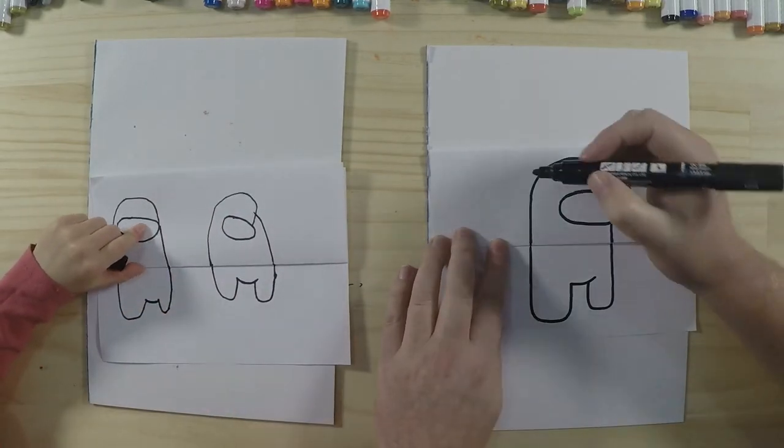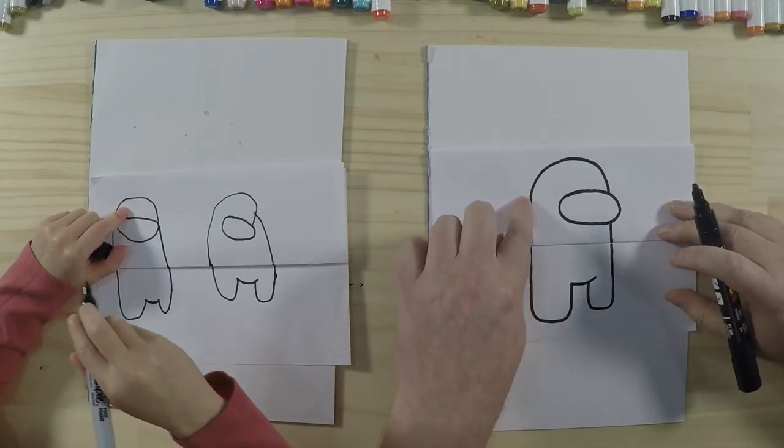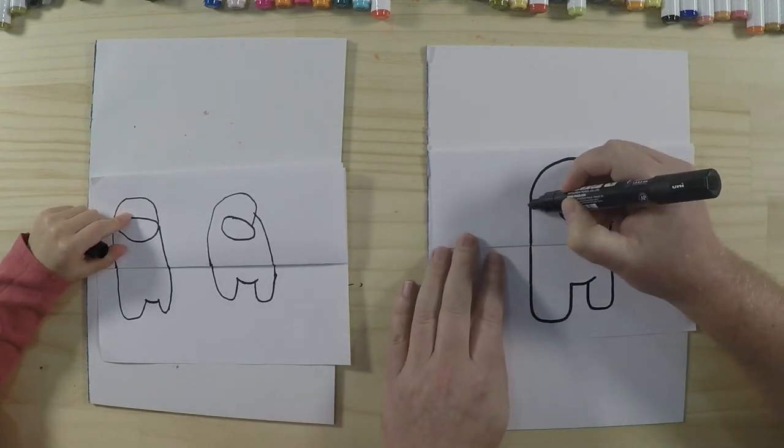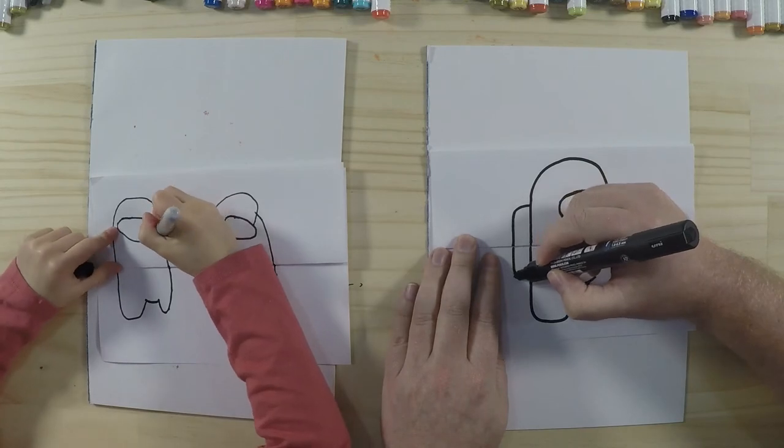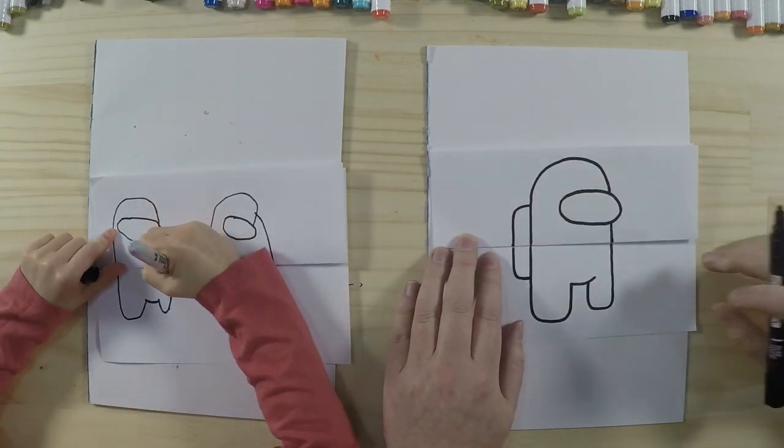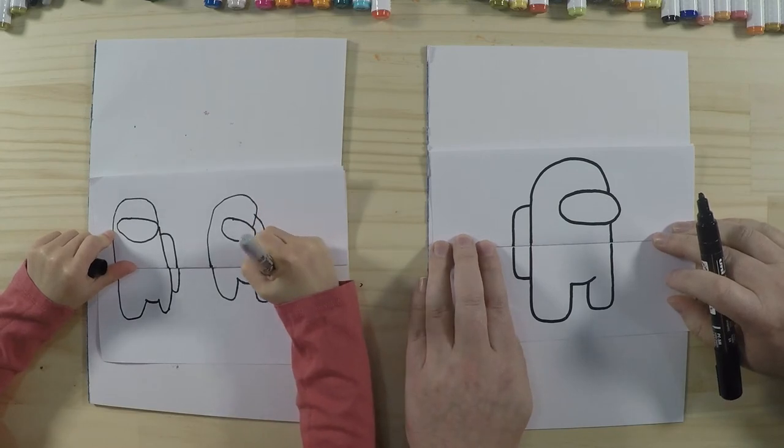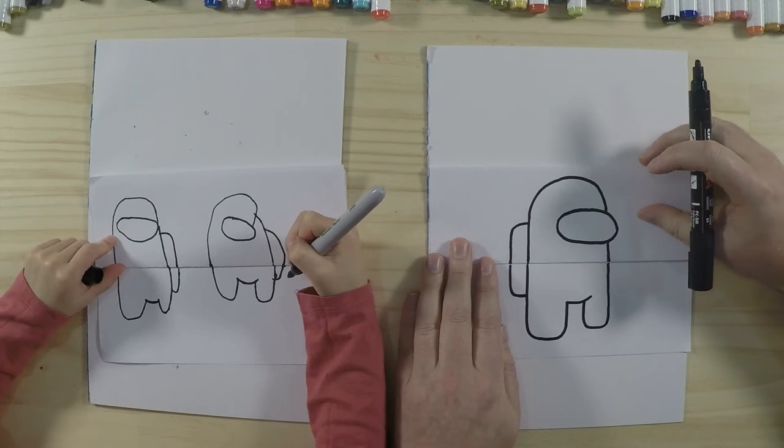And then the next part there is his backpack. So the backpack is actually stretched across both sides. So we're going to do a top half in here and then the bottom half on there. So we're going to draw that sticking out, round and down, and a little curve like that. Okay. Good. So that looks like a just a normal crewmate character.